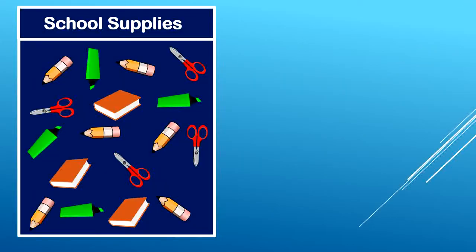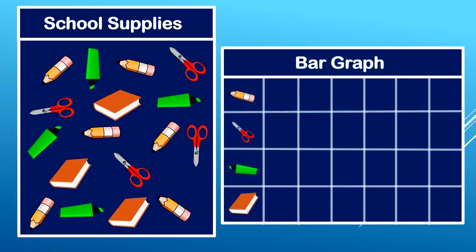Here's the picture that we will use to create our bar graph. This picture is labeled school supplies. Here's the bar graph that we are going to fill out for our school supplies picture. At the top we see the title bar graph. Down here we see the sections where we will show how many pencils, scissors, markers, and books there are.